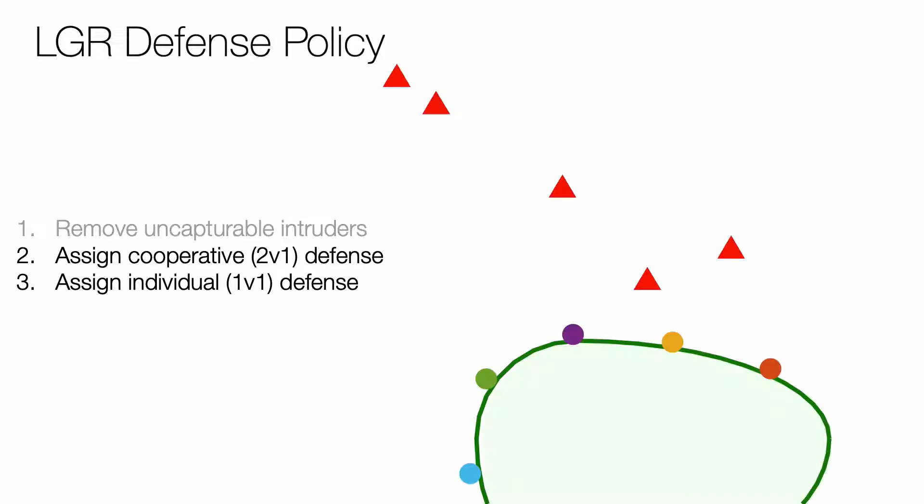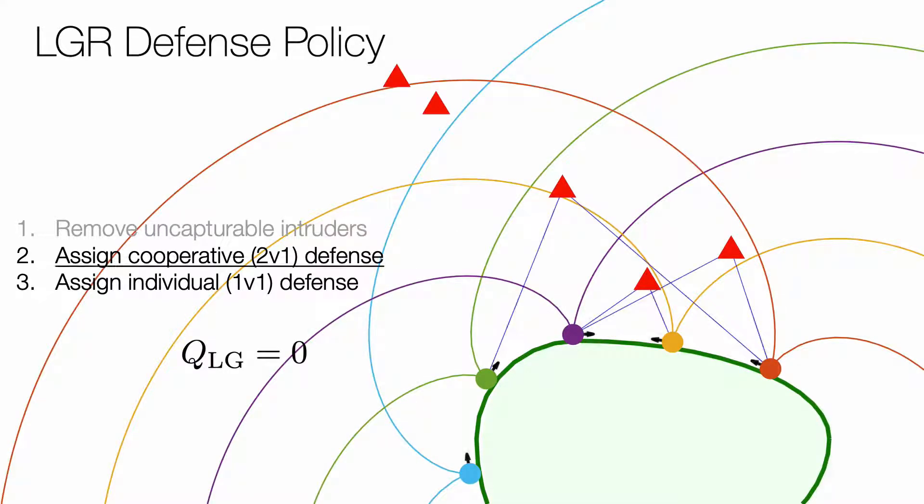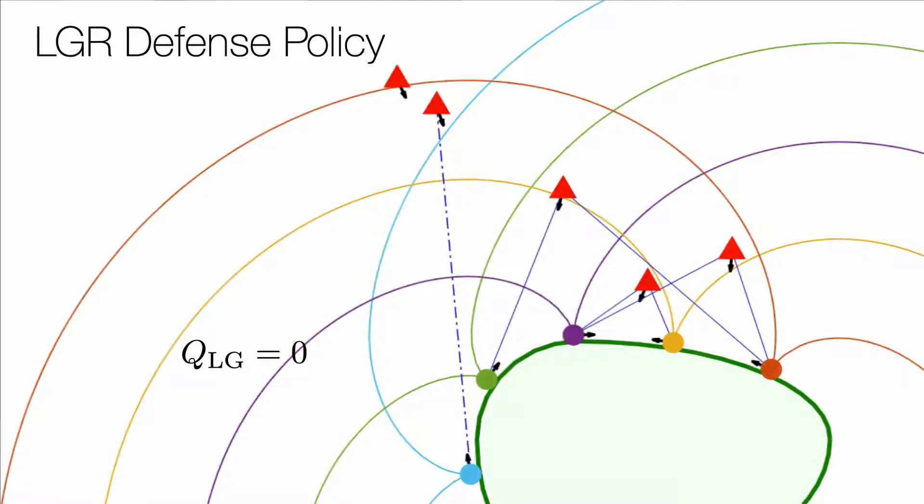The proposed LGR defense policy first assigns cooperative two versus one games, and then the remaining defenders get one versus one assignments.